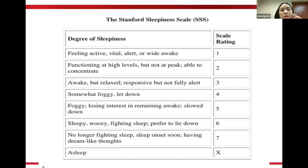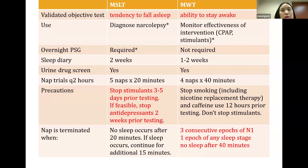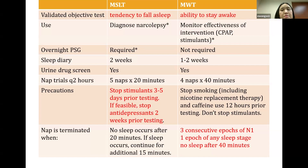Idiopathic hypersomnia typically scores 10–15 on the Epworth. The Stanford Sleepiness Scale measures sleepiness at a specific moment in time and is commonly used during MWT. The MSLT is a validated objective test measuring the tendency to fall asleep, while the MWT measures the ability to stay awake. MSLT is used to diagnose narcolepsy or idiopathic hypersomnia; MWT monitors the effectiveness of interventions like CPAP or stimulants.